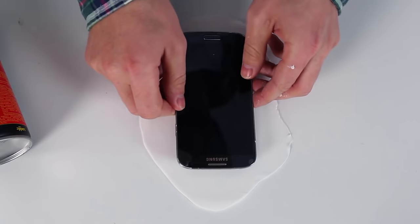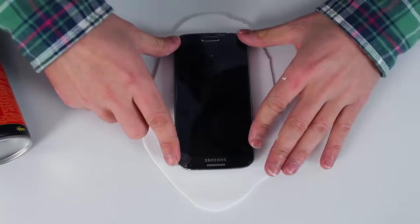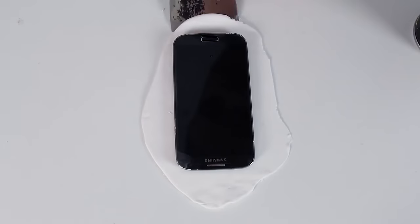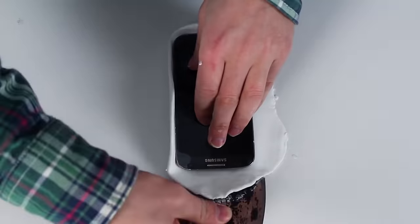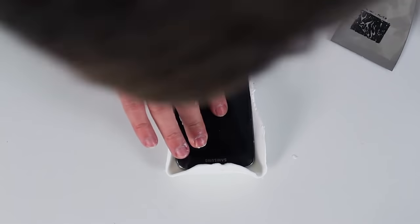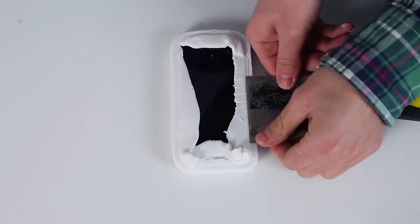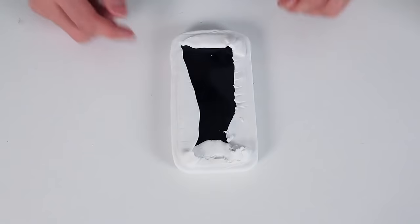Now put the phone in the middle. Press it down. Then fold the edges. What's left now is to wait until the silicone dries.